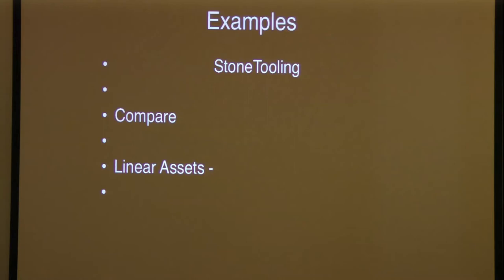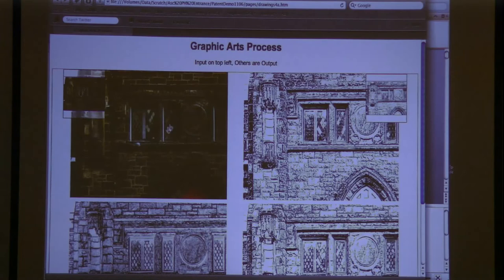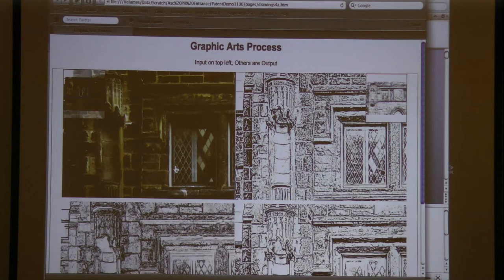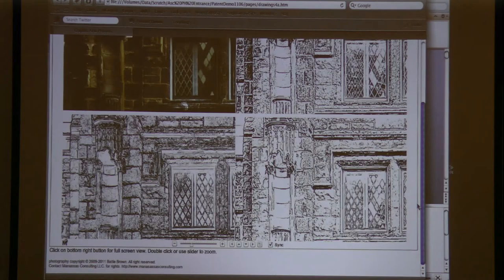We can even get a quad view — we have color and a variety of different processing options here. With this kind of thing you could document pre-existing conditions, then post-demolition, post-repair, and you could even monitor the project over time. You can see very different features brought to bear there.